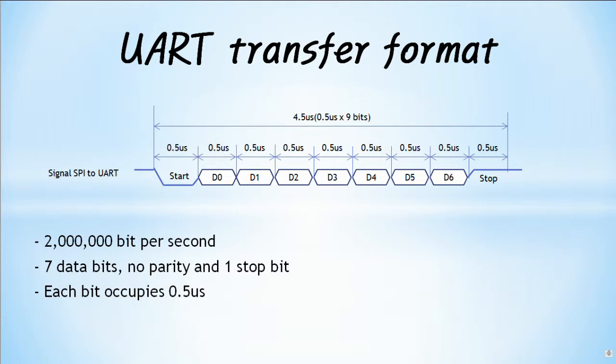As we all know, SPI is synchronous communication and UART is asynchronous communication. The UART is asynchronous, so the clock signal is not transmitted and the start bit is used for synchronization purposes. The start bit means that the RX/TX pin of the UART is kept low for 1 bit time, determined by the baud rate, in the logical high idle state. If you use 2 million BPS, no parity, 7 data bits and 1 stop bit, you can output 1 character every 4.5 microseconds because it is 9 bits by 0.5 microsecond.